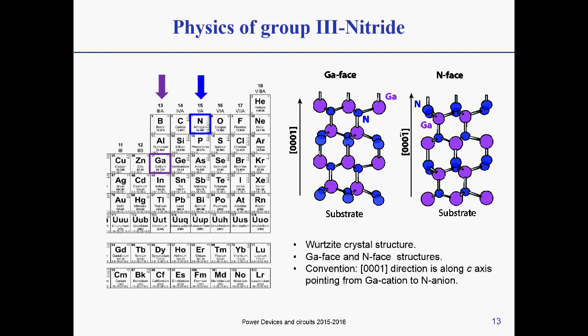Gallium nitride is a 3-5 material, and in particular it's a 3-nitride material. As you can see, the gallium nitride is in group 3, the GaN is in group 3, and the nitride is in group 5. What we have on the right-hand side of the slide is the crystal structure of the gallium nitride.